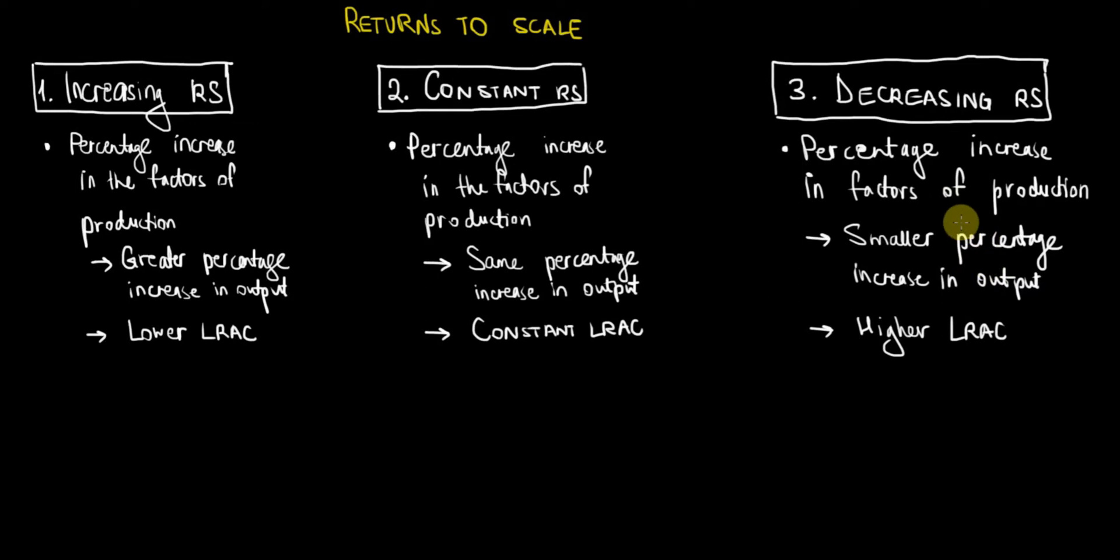As a result of this, when we have more costs distributed for fewer units of output, we will have a higher long-run average cost.